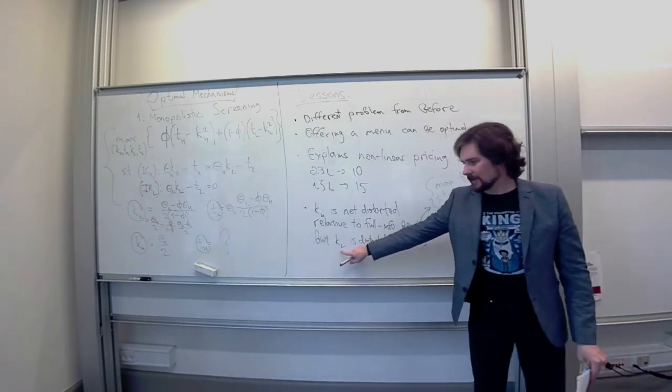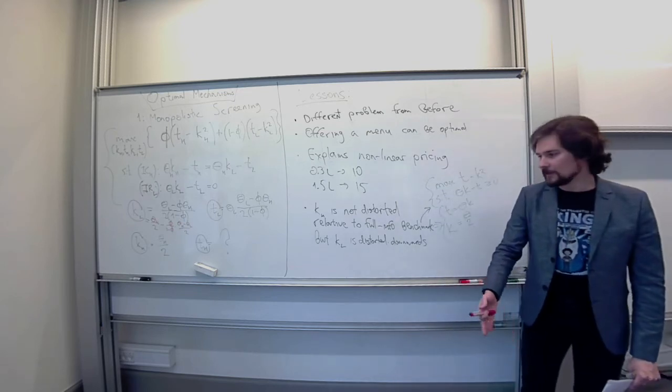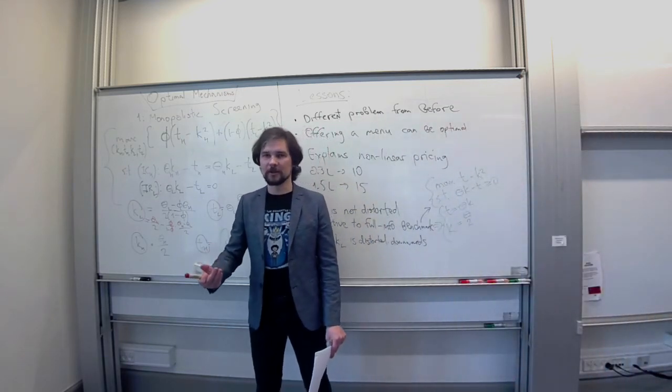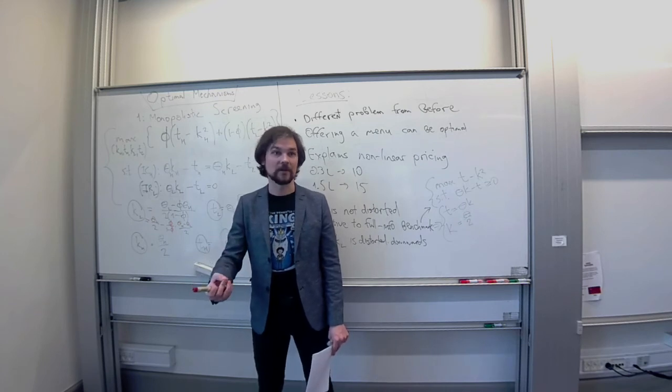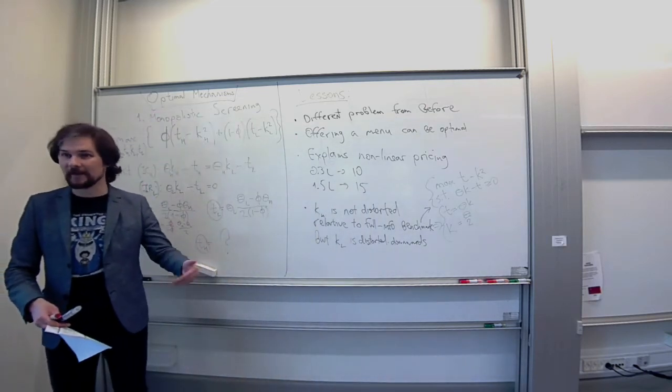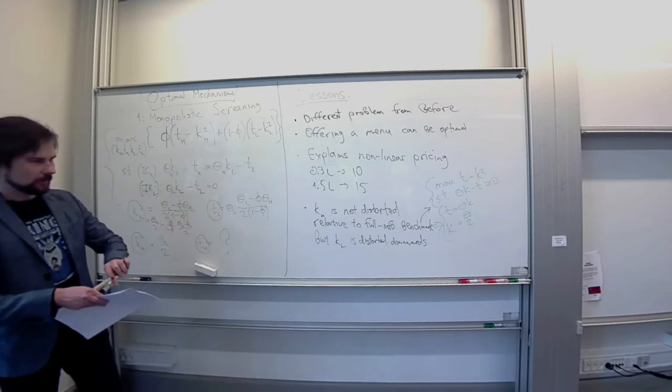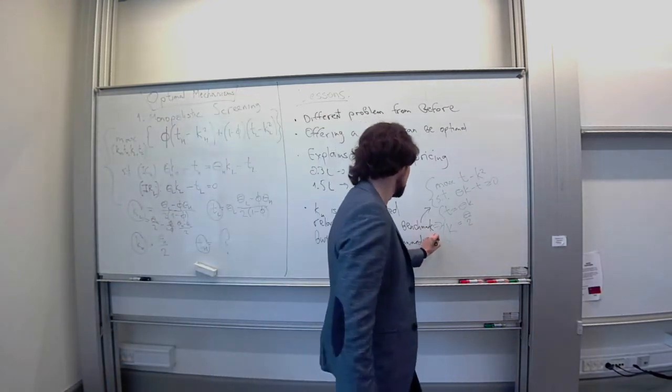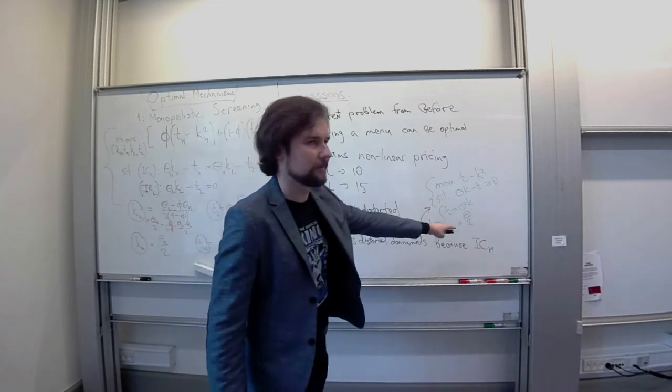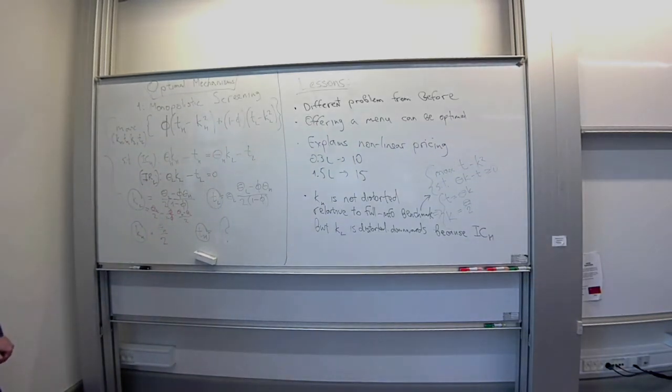By distorting the allocation of the low type downwards, quite possibly down to zero, just completely ignoring the low valuation buyers. What we do, what that buys us, is that we can extract more surplus from the high type. We have easier time extracting surplus from the high type. And the high type is the one that we want to deal with because the high type values item a lot. It is ready to pay a lot, contributes a lot in profits. So, KL is distorted downwards because of ICH.